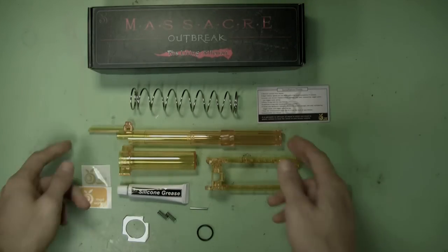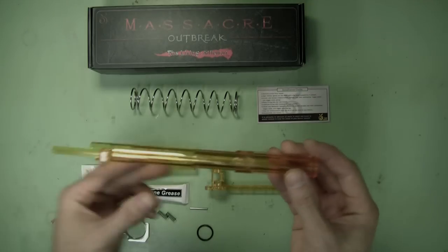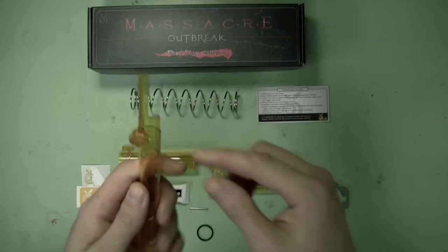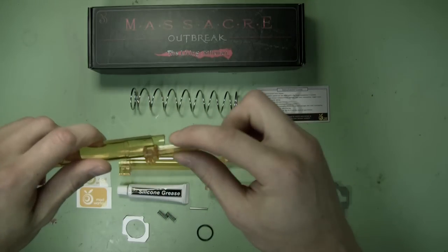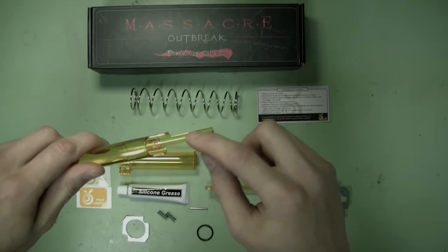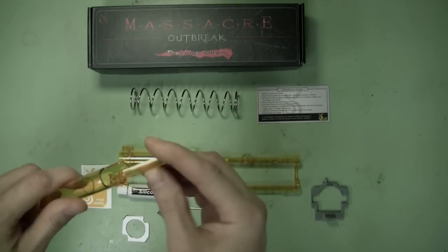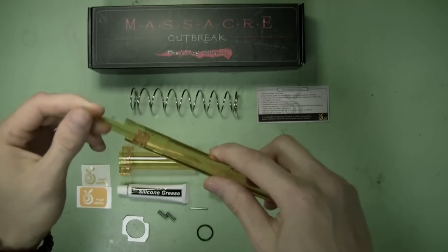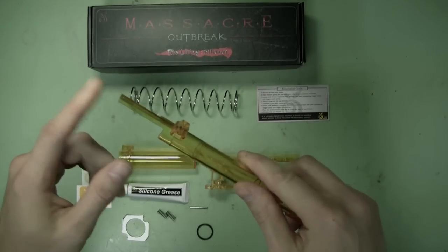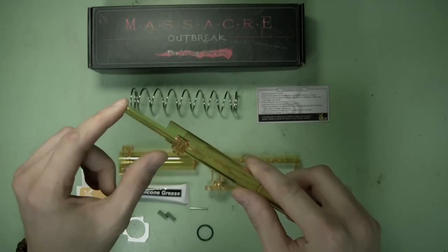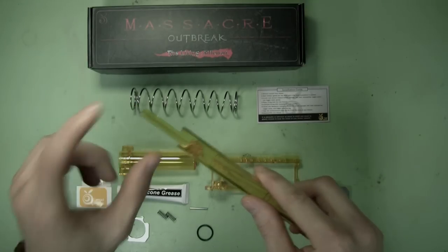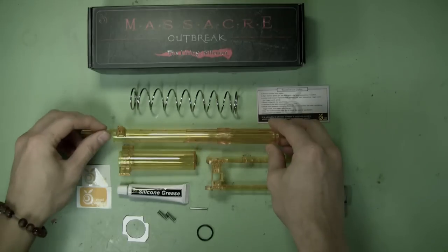The breech is a high strength polycarbonate, but the tip here is a little more delicate than with other blasters. It's stronger than stock, but if you wrench it to either side, it could bend out of shape. So just be careful when you're installing, just remember that the nose of the Alpha Trooper breech is a little bit more delicate than with other blasters.